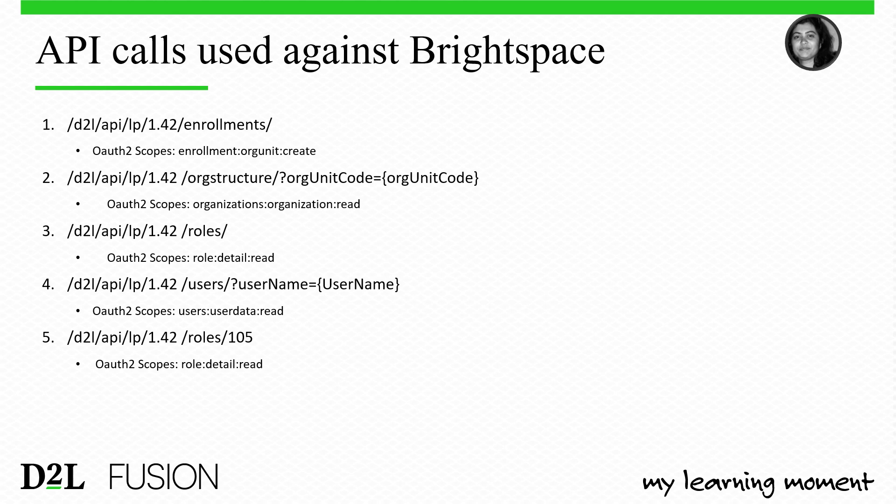Here is a quick overview of the API calls used against Brightspace. The scopes used are: Enrollments (create), Organization (read) to verify the org unit code exists, Roles to check if the role name exists, Users to retrieve the user ID from the username, and a health check to confirm the API is working, no forbidden errors, and the access token is valid.